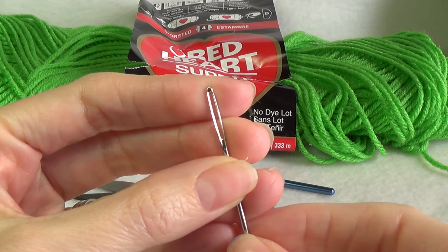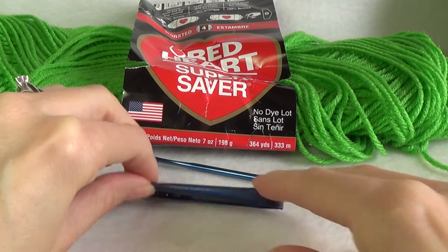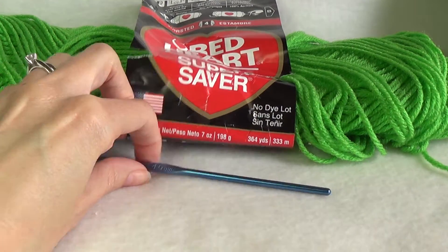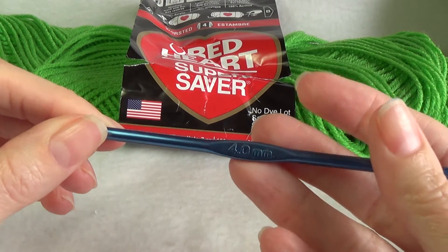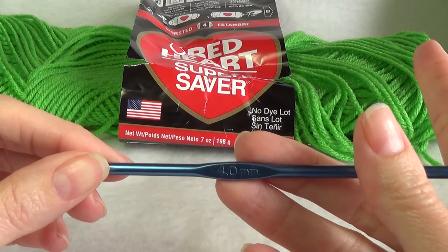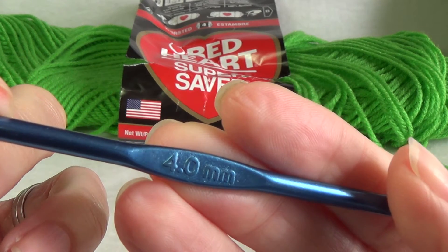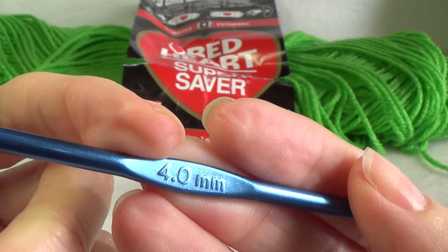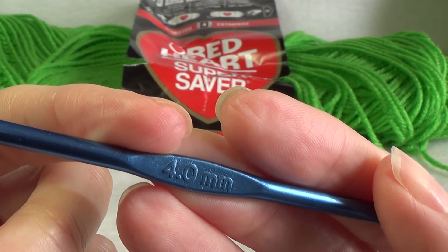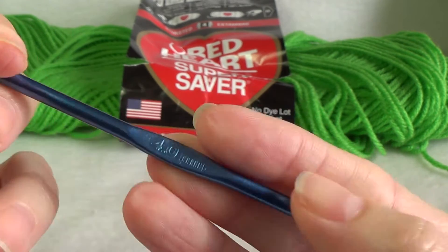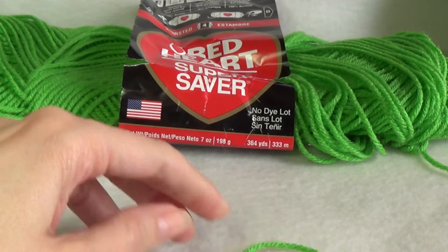We're going to need a yarn needle with a big eye, a pair of sharp scissors, and a crochet hook to go with your yarn. Now the yarn recommends about a 5.5 or an I hook, but you want a crochet hook that is smaller. This is about a G hook or a 4 millimeter because you want your stitches to be reasonably tight.